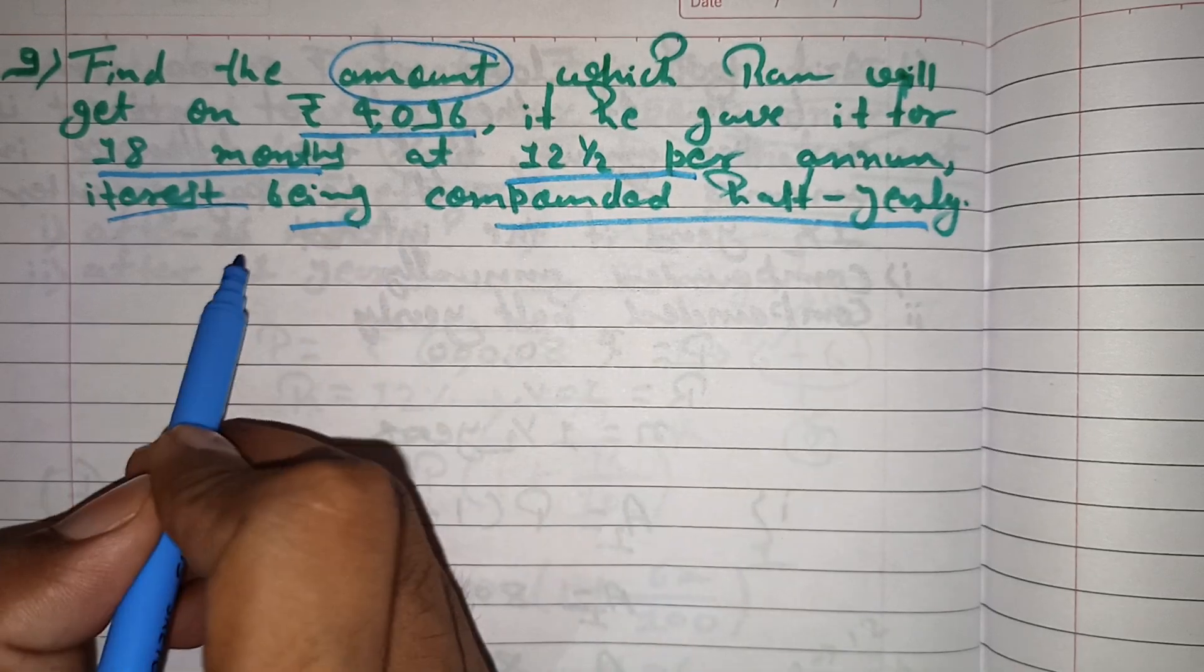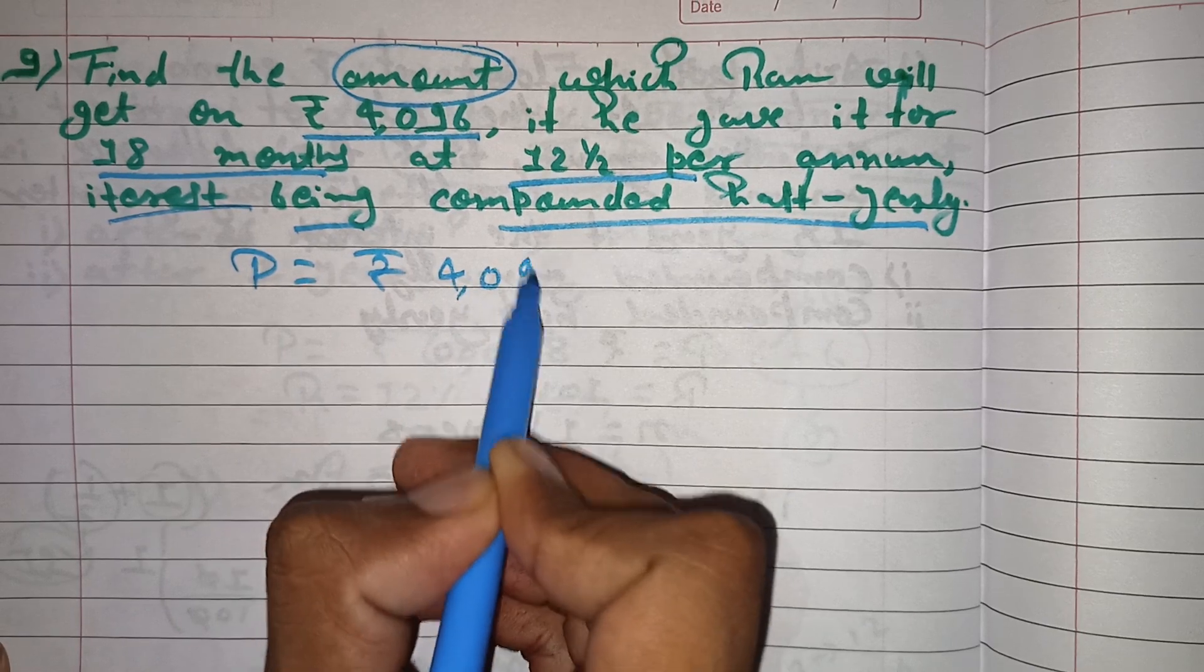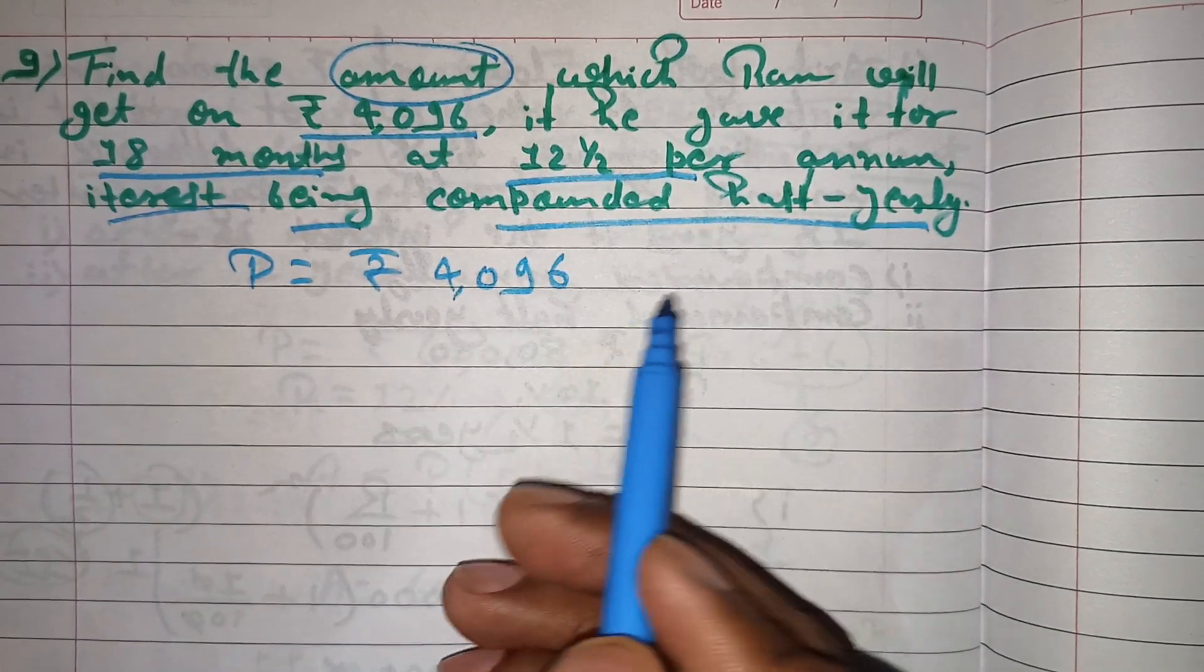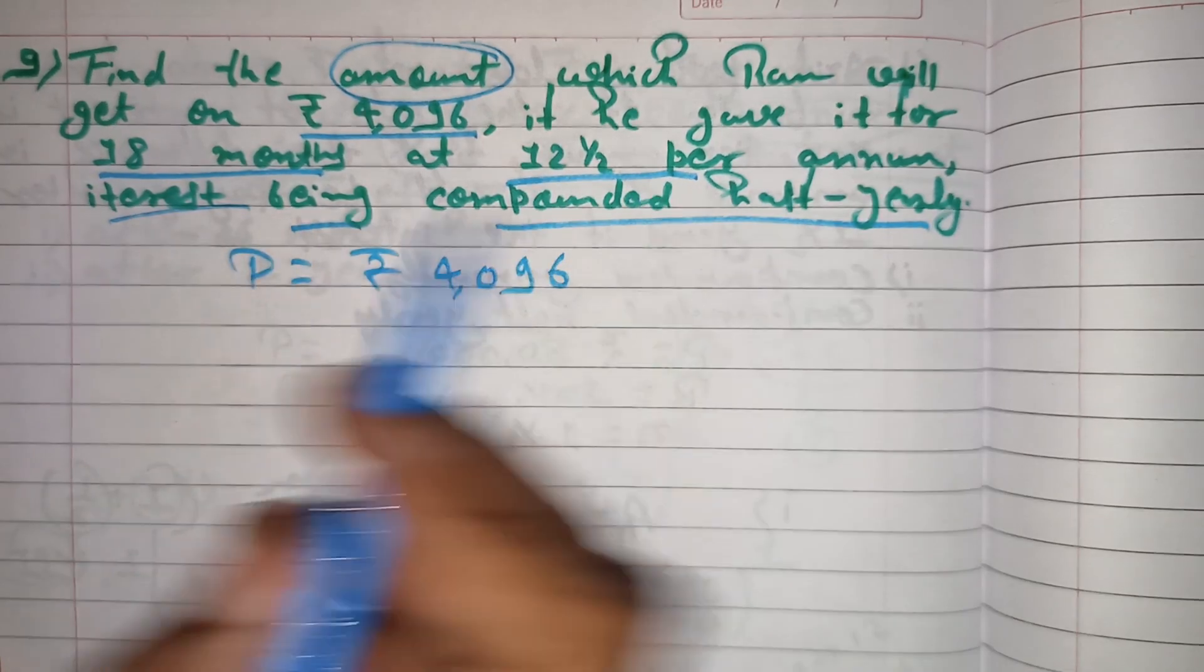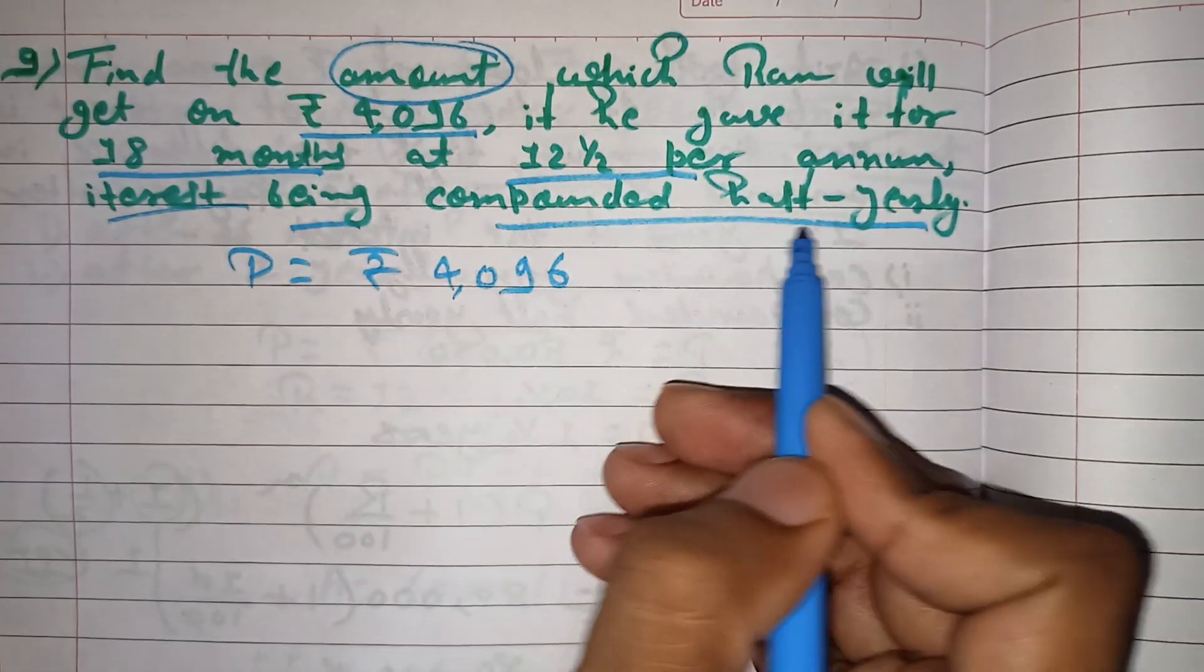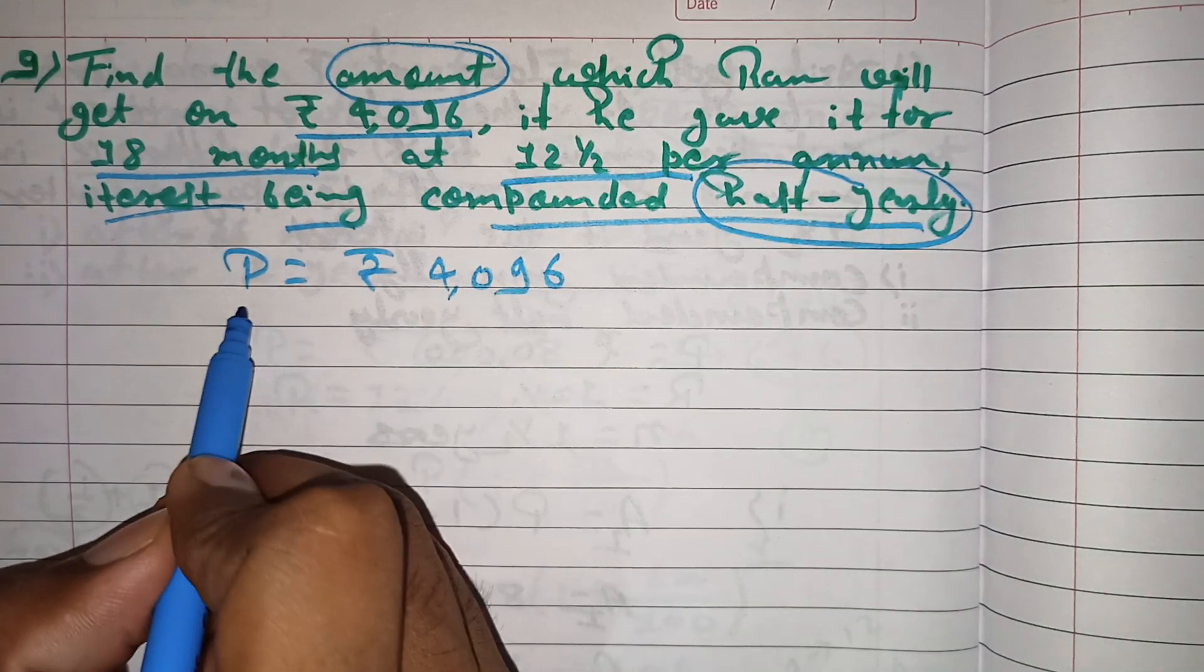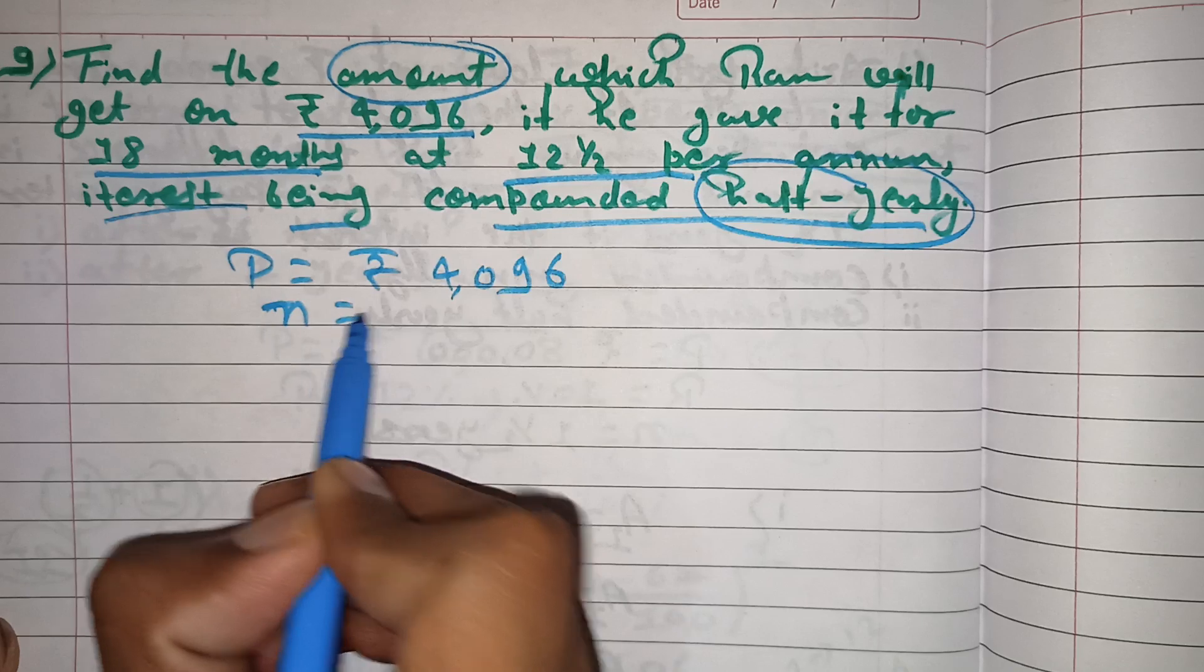So principal amount is rupees 4096. He gave it for 18 months, compounded half yearly. Time period is 18 months.